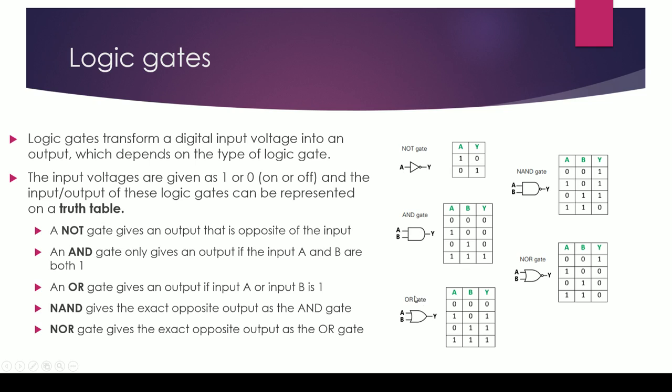You've got five logic gates that you need to know, and we'll take a look at these three first. The NOT gate gives an output voltage that is always opposite to the input. If you look at this truth table, A represents the input and it's only got one input, and Y is the output.